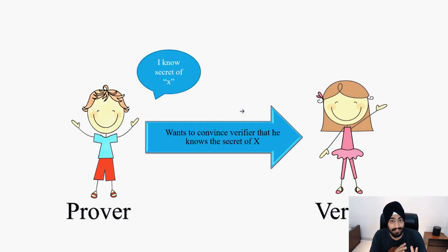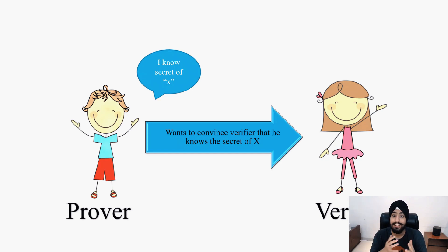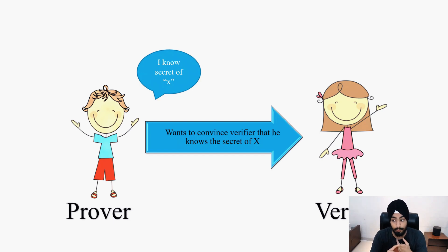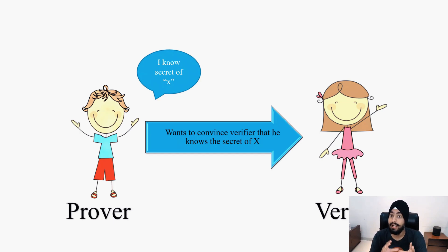In every example we are going to have two things: one will be a prover and the second will be a verifier. Zero knowledge is about proving something without conveying or revealing any extra information. The prover will prove to the verifier that he knows a certain thing without revealing any other extra information.